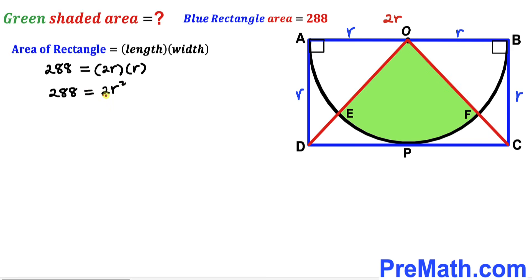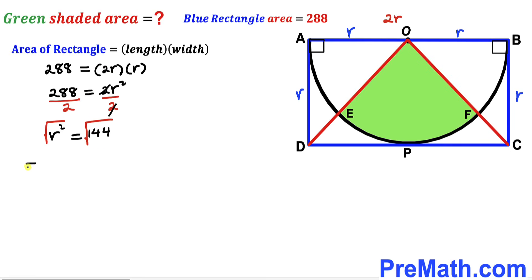Dividing both sides by 2, the twos cancel, so r² equals 144. Undoing the square by taking the square root on both sides, our radius lowercase r turns out to be positive 12 units. So the radius of this semicircle is 12.